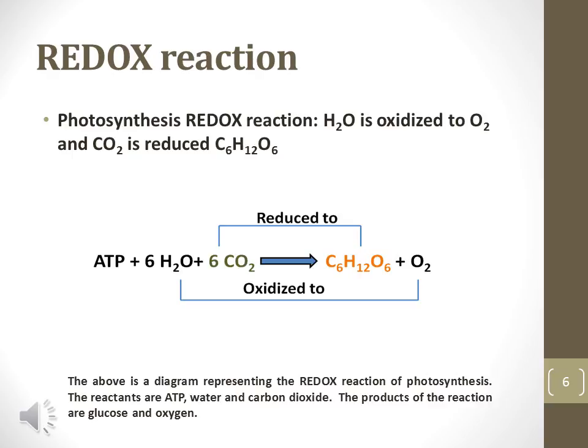Photosynthesis is a redox reaction that takes place inside of a chloroplast. Sunlight provides the energy for this endergonic reaction to take place. Water is said to be oxidized because it loses electrons in the form of hydrogen atoms. Oppositely, carbon dioxide is reduced because it gains electrons in the form of hydrogen atoms.